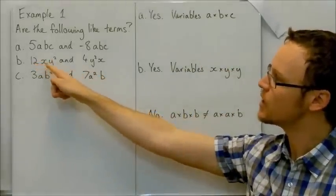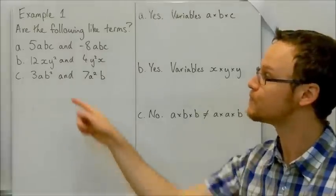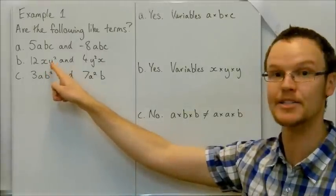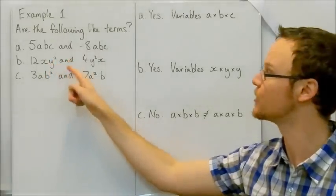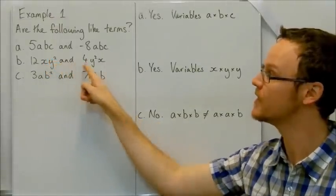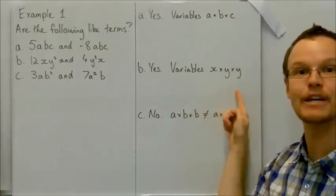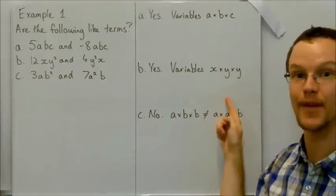b, here the variables we've got are the same as well. They're not in the same order. But y squared means y times y. y times y. So here we've got x times y times y. And here we've got y times y times x. So it's the same combination of variables. They are like terms.